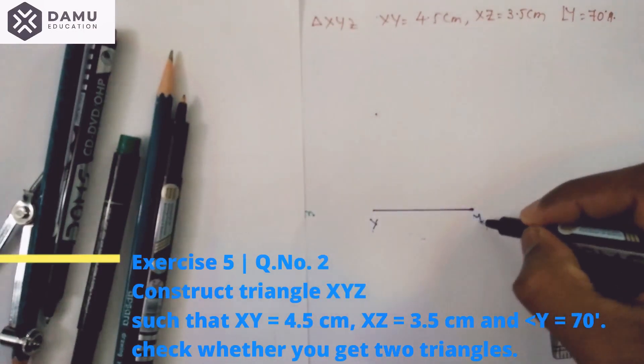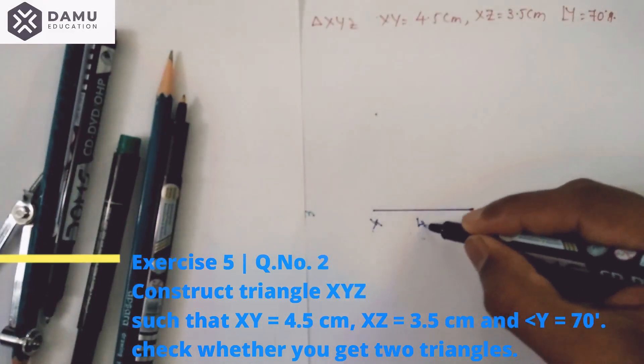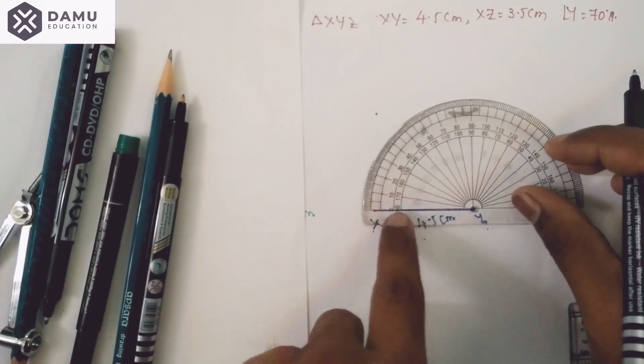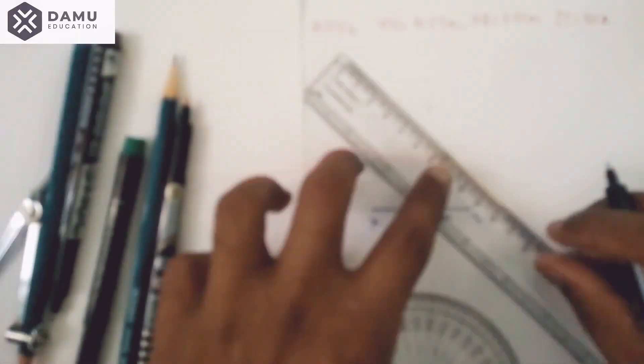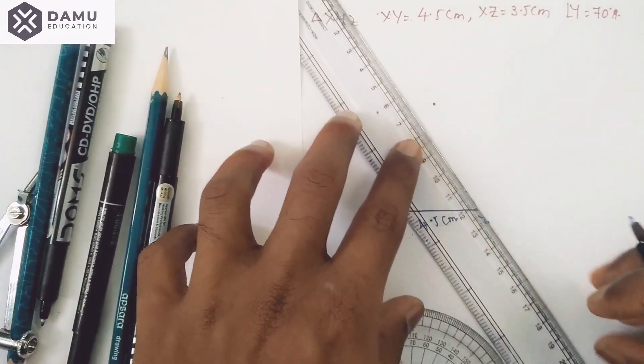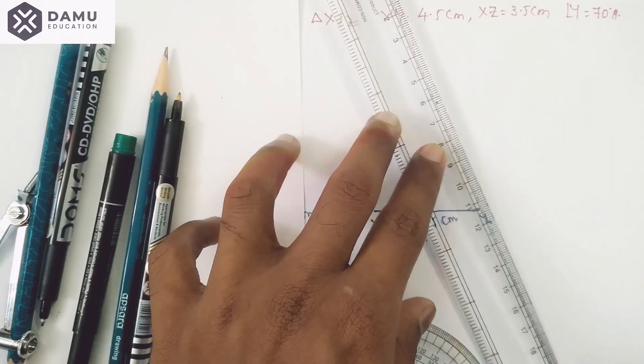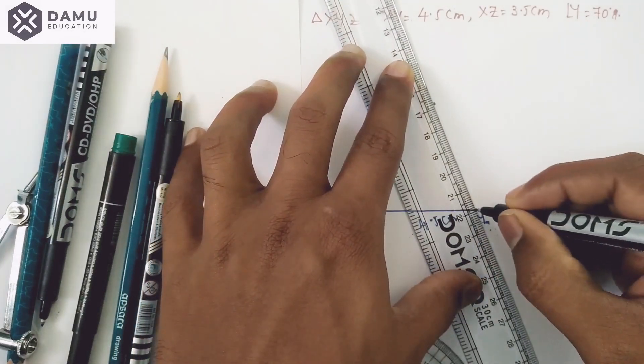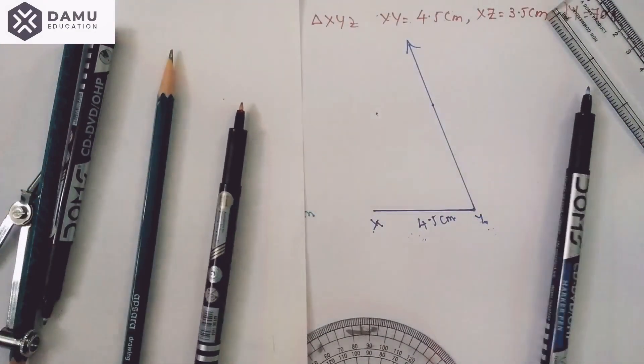Coincide the protractor on the left side at 70 degrees. From here, we will draw one ray with 70 degrees. The angle is 70 degrees.